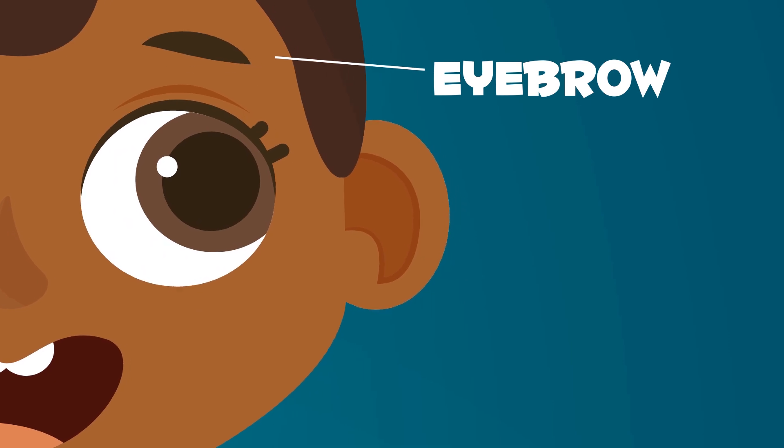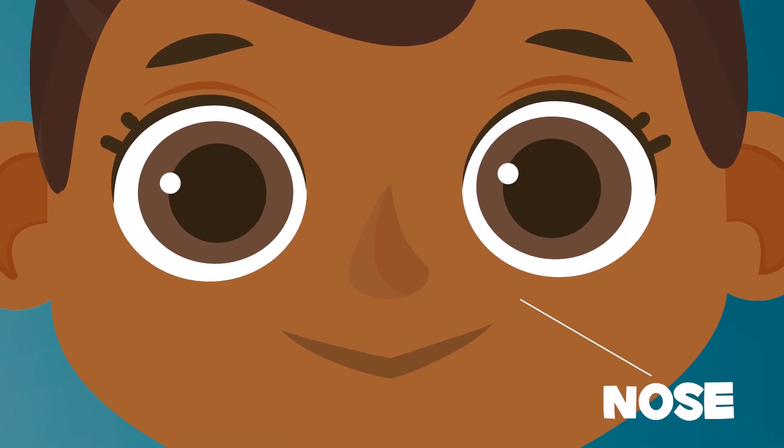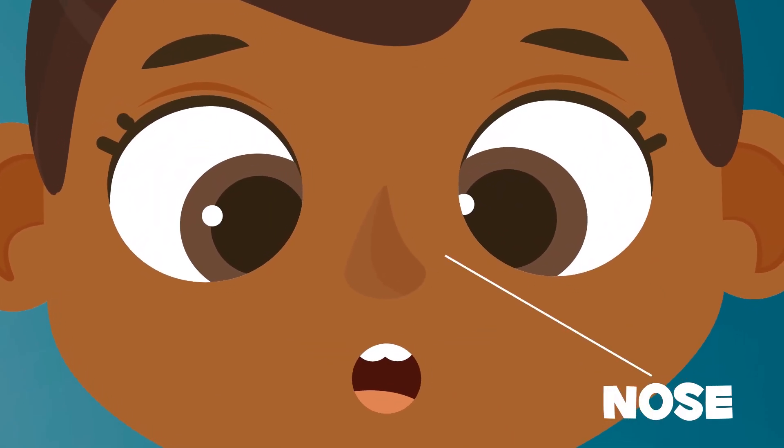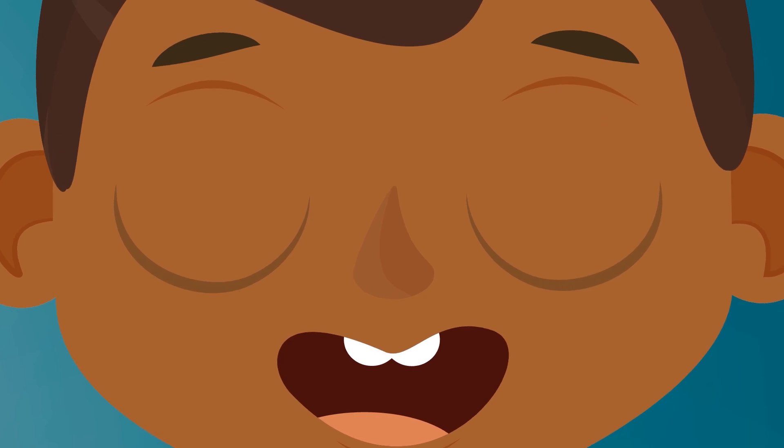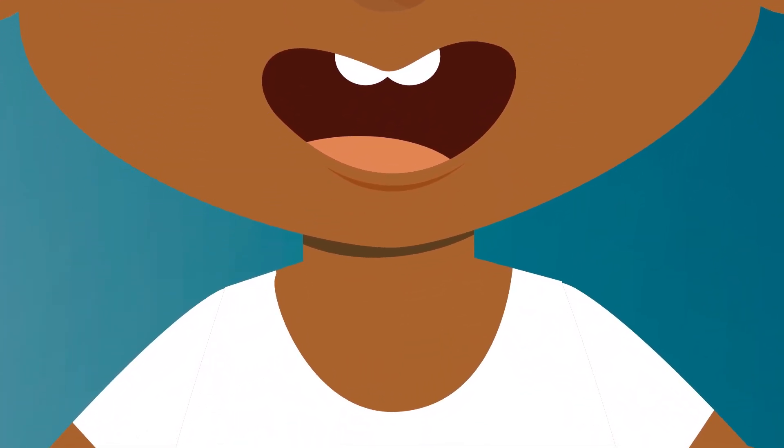Eyebrows are above your eyes. They're a group of small hairs that make a curve. You can smell with your nose. Your sense of smell is found in your nose.